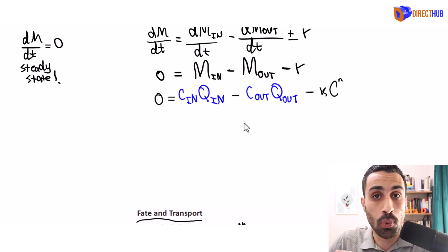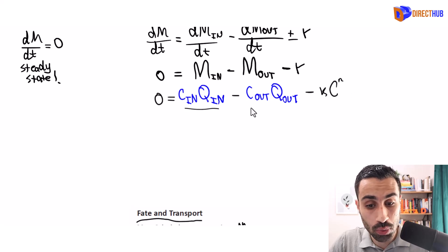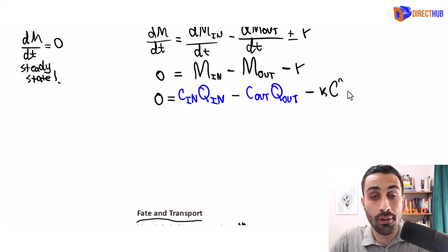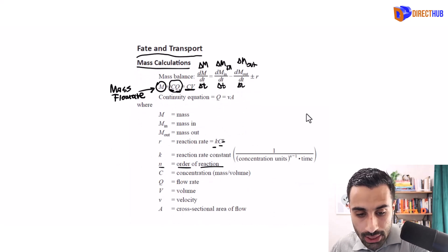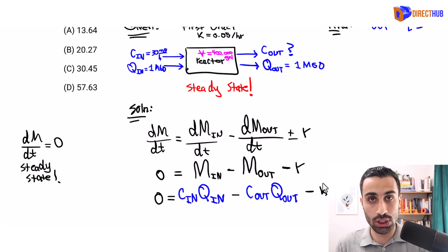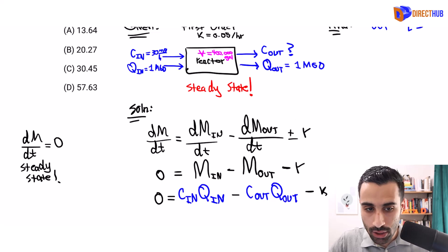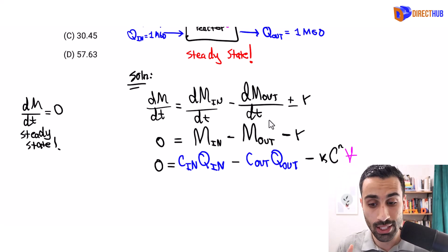Something very important: if you're given the volume, include it next to the reaction rate term. All terms must have the same units — mass flow rate — so we include the volume to make the units consistent. The reaction occurs over that volume inside the tank, decreasing the nitrogen concentration, and the units will confirm this.